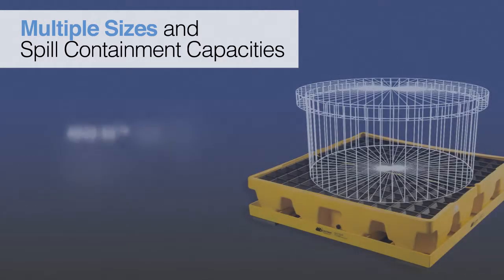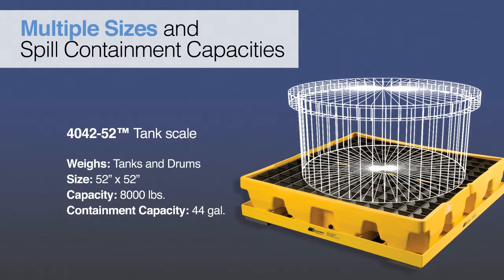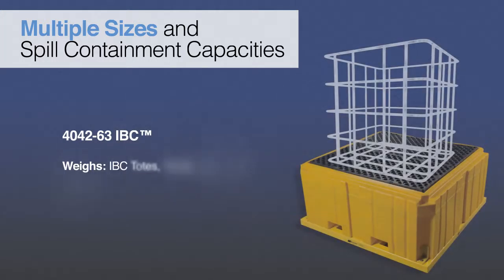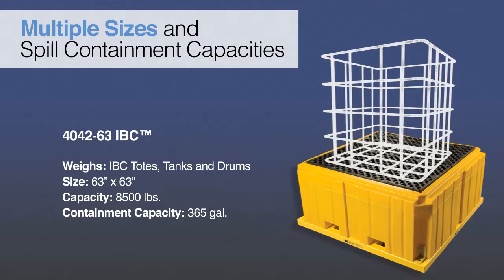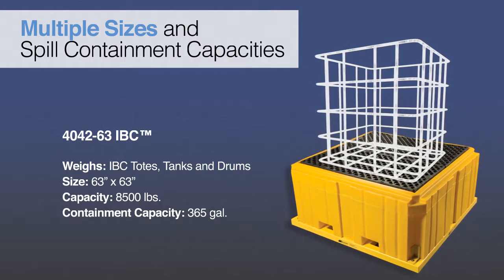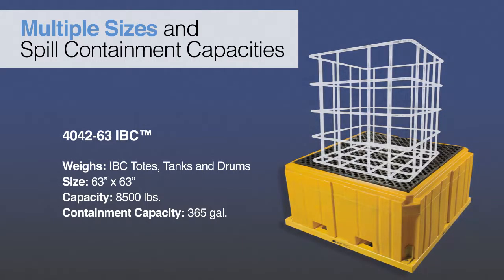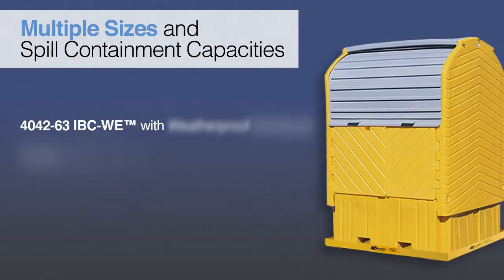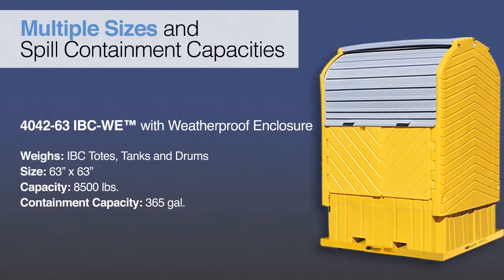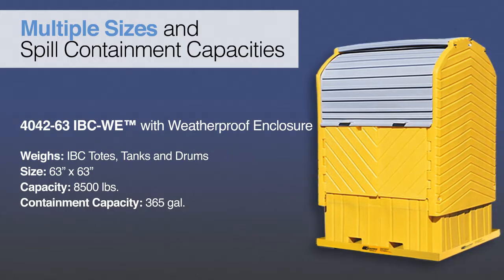A 52-inch by 52-inch tank scale ideal for pump-in, pump-out applications. A 63-inch by 63-inch scale that can weigh IBC totes, tanks, or drums with the capacity to contain up to a 365-gallon spill. And a 63-inch by 63-inch IBC totes, tank, or drum scale that features an integral weatherproof enclosure.